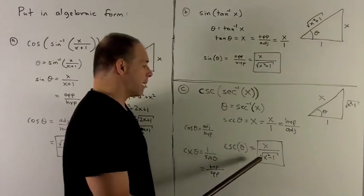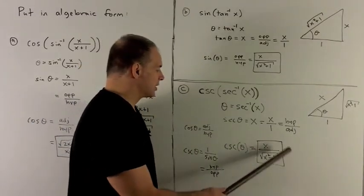hypotenuse is x. Opposite is radical x squared minus 1. And that's my cosecant.